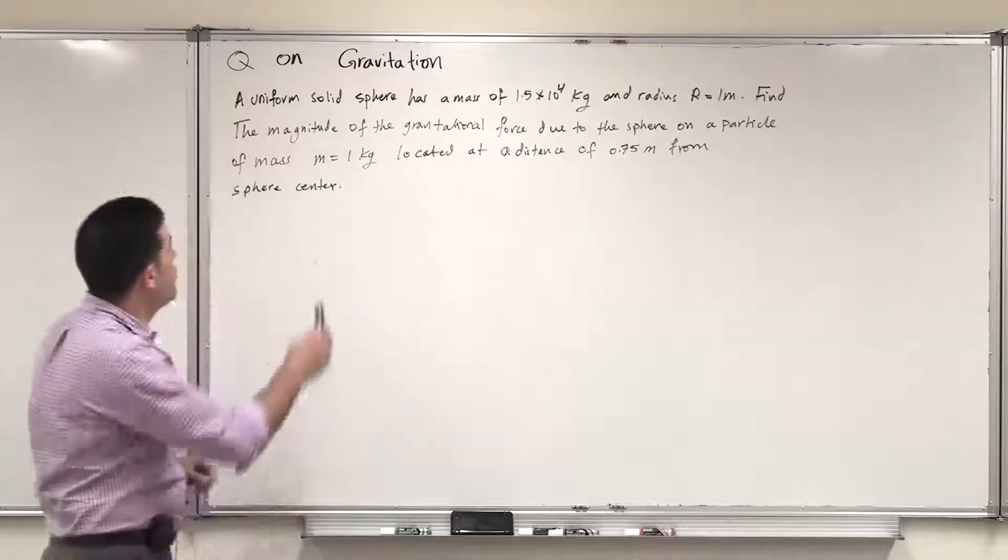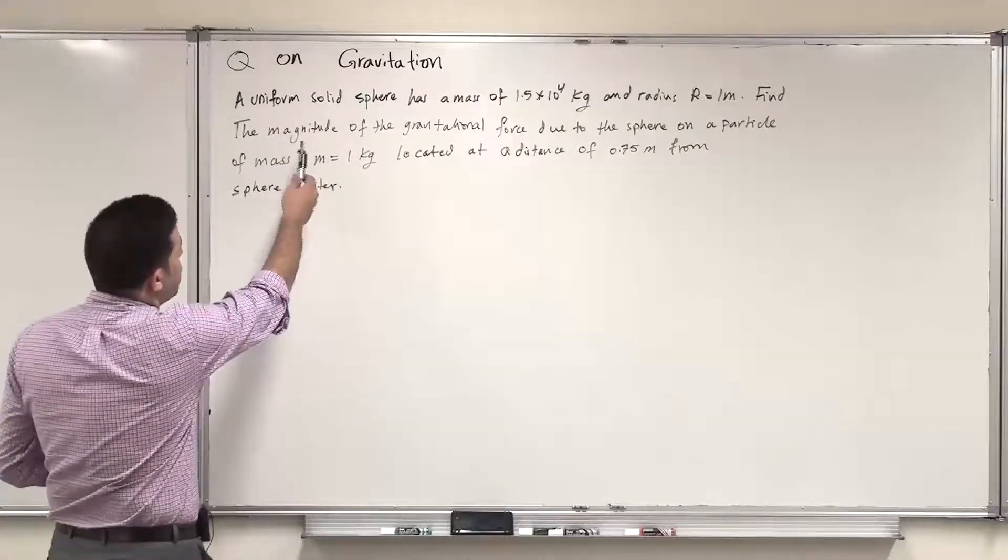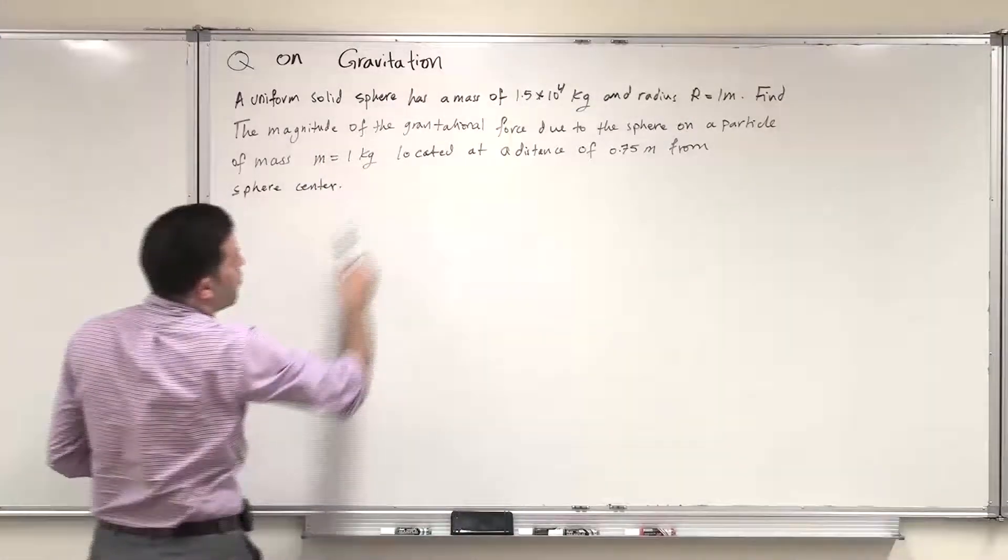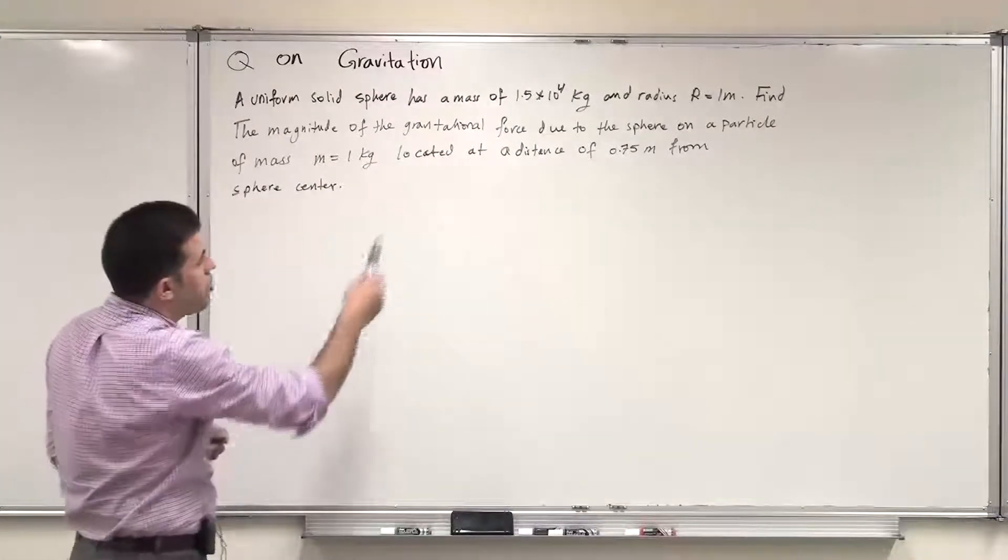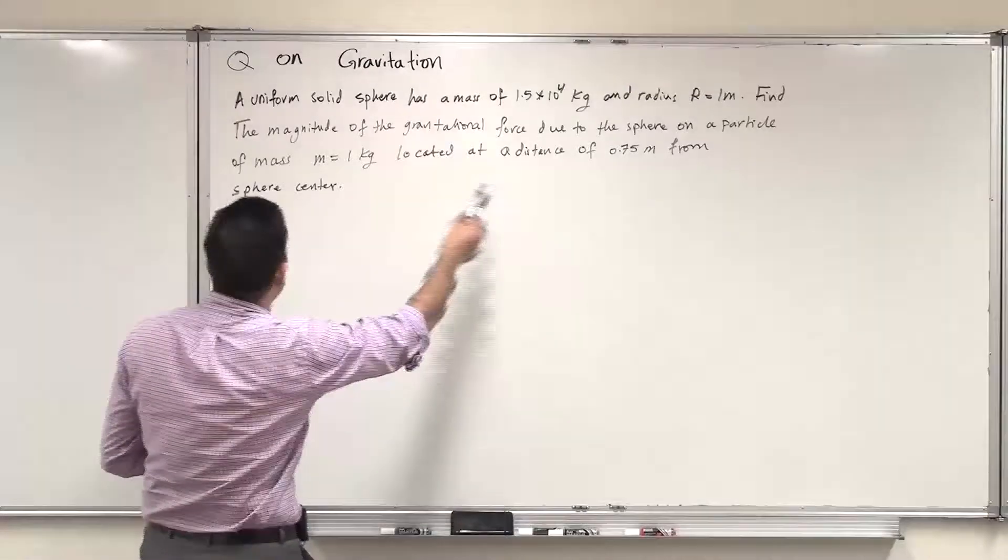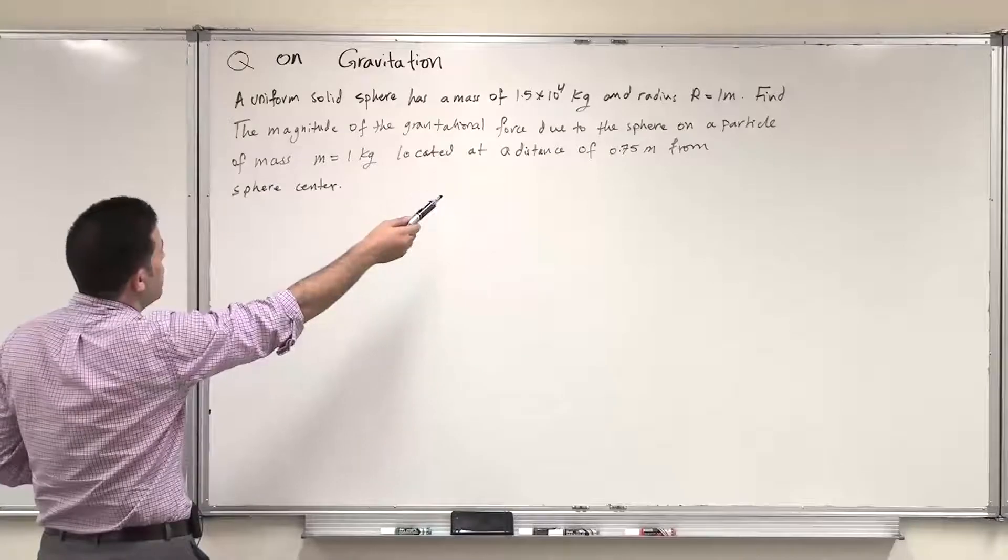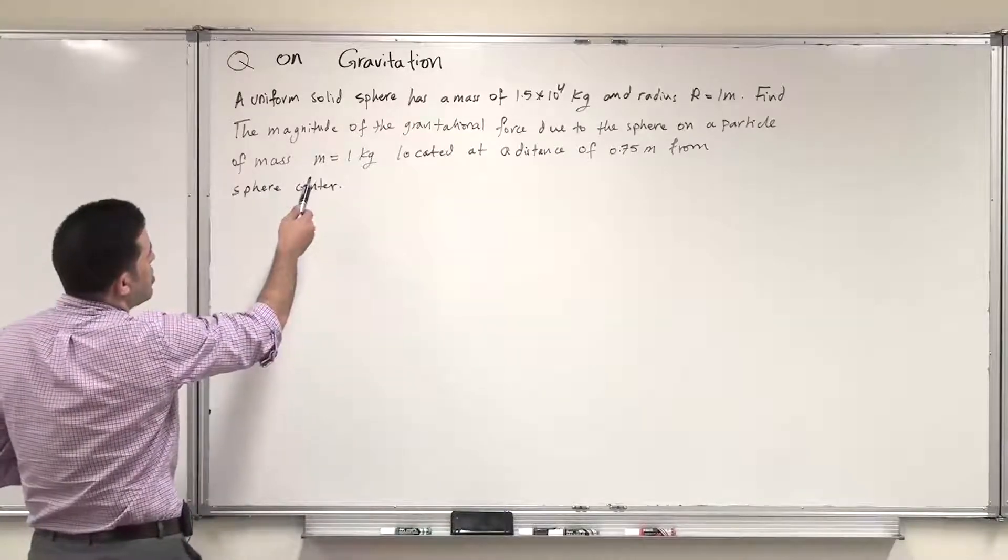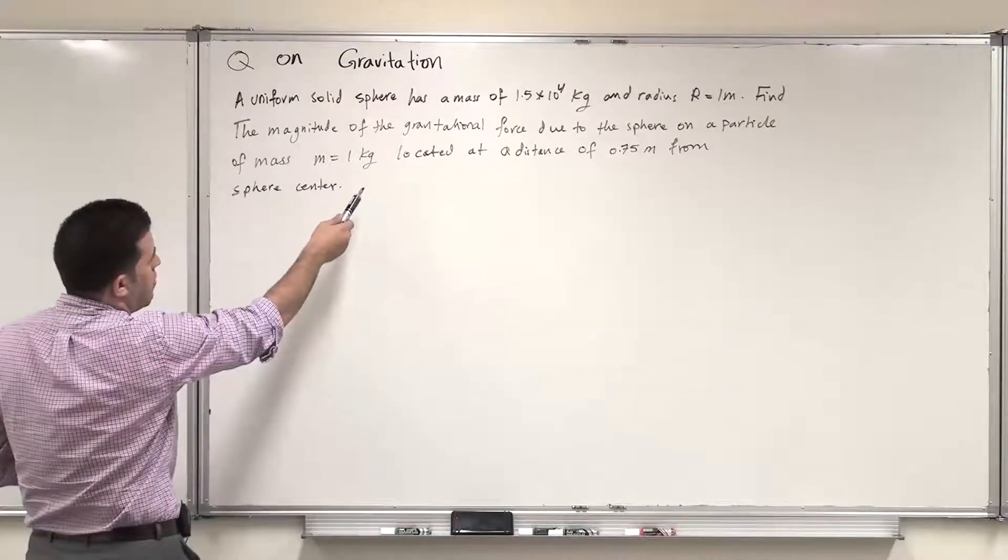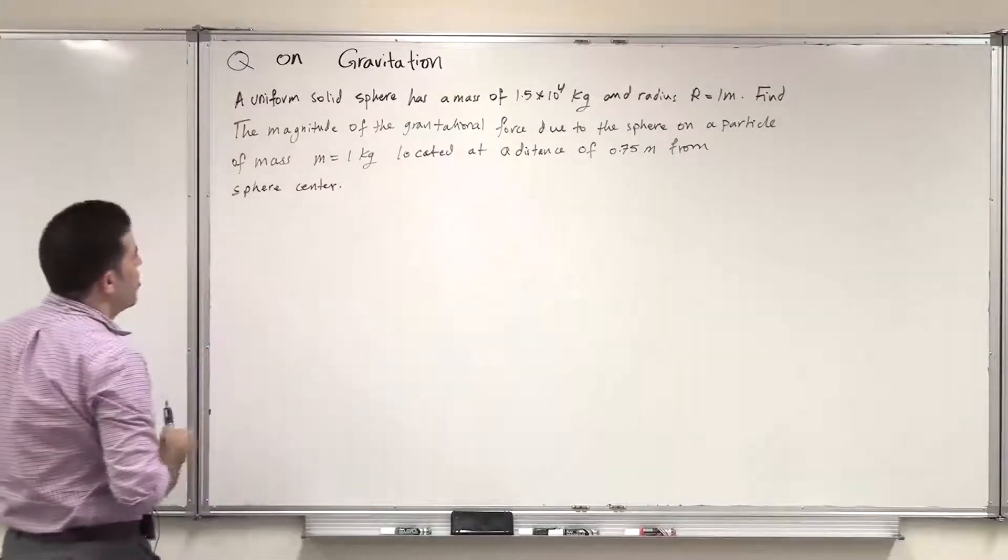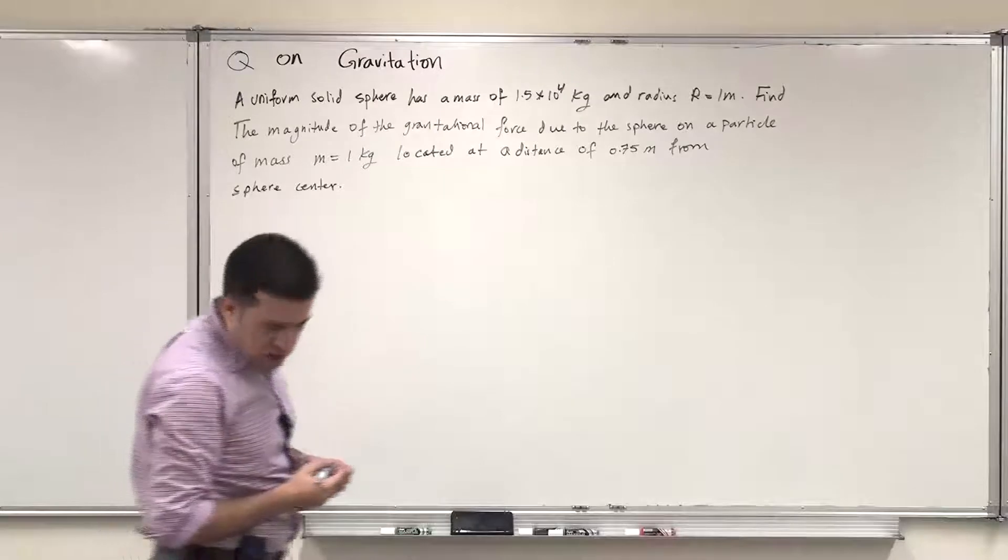Assalamu alaikum. This is a question on gravitation. A uniform solid sphere has a mass of 1.5×10^4 kilograms and radius r of 1 meter. Find the magnitude of the gravitational force due to the sphere on a particle of mass m equal 1 kilogram located at a distance of 0.75 meters from the sphere center.